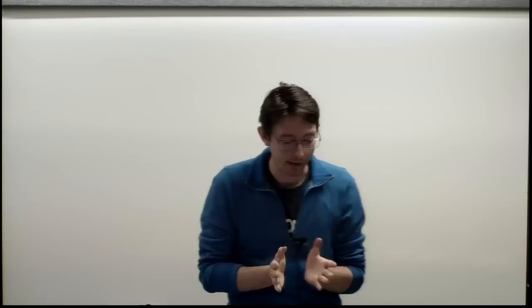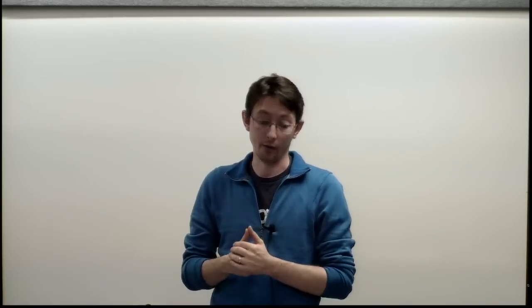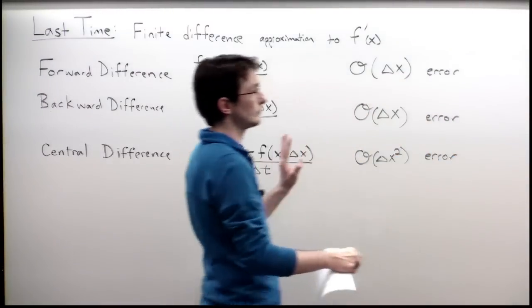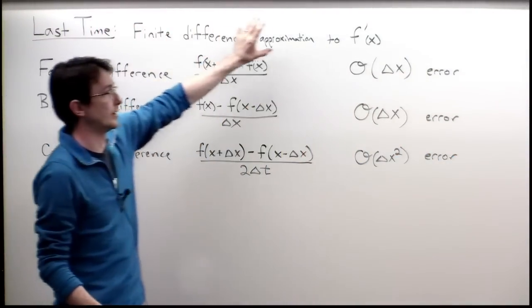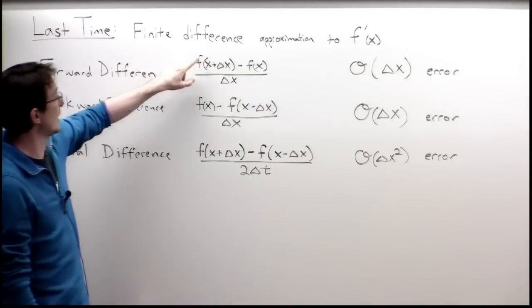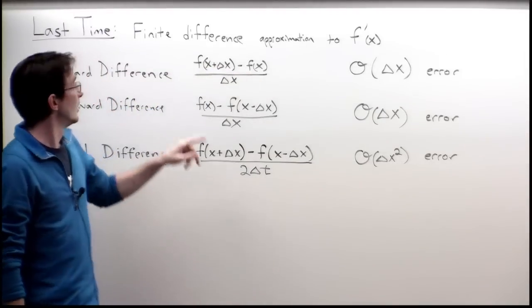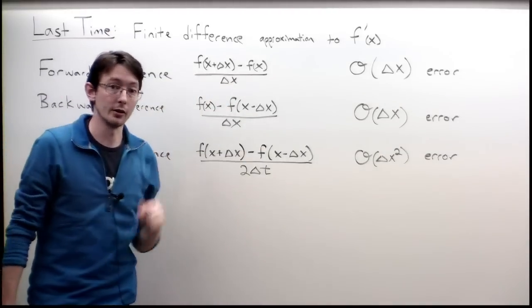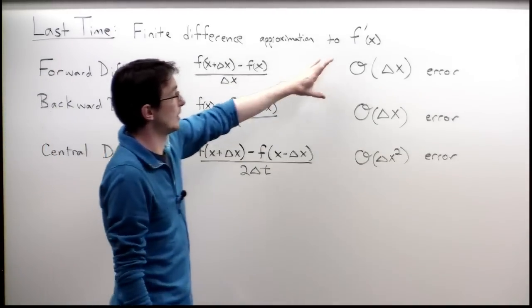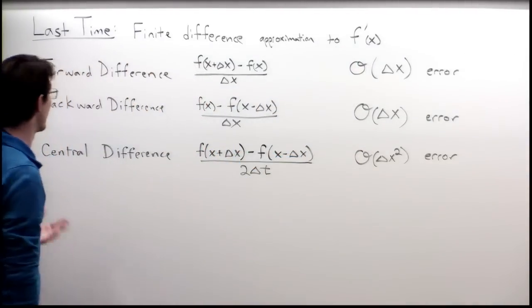Welcome back. Last time we talked about finite difference approximations to the derivative of a function or data with respect to a variable. We had a forward difference approximation: f of x plus delta x minus f of x, divided by delta x. If we take the limit as delta x goes to zero, we recover the exact derivative. This has error on the order of delta x, so if I make delta x smaller, my error goes down proportionally.